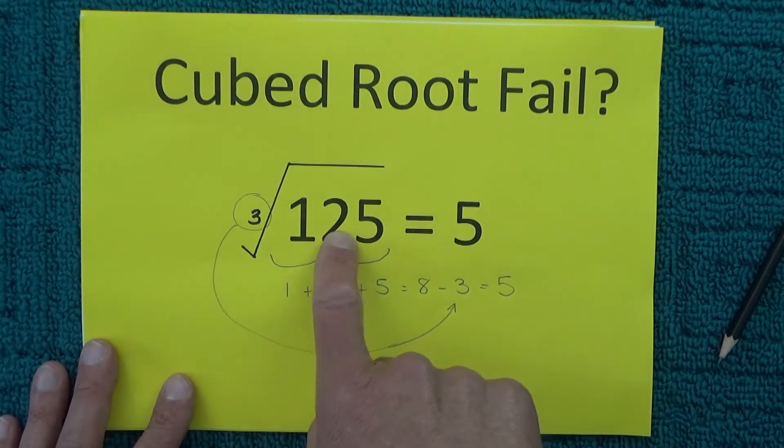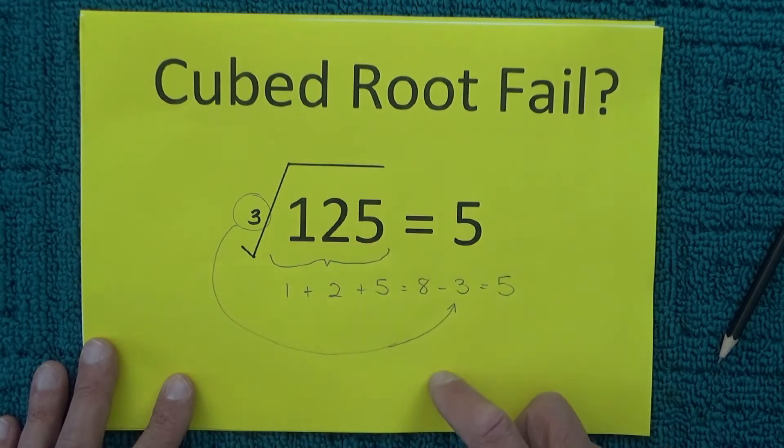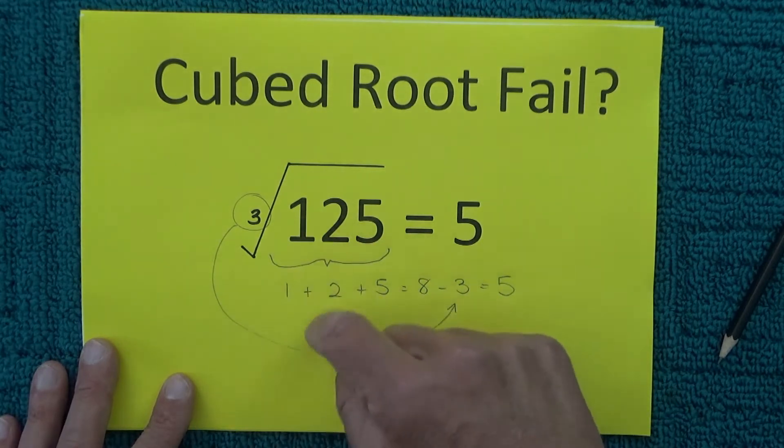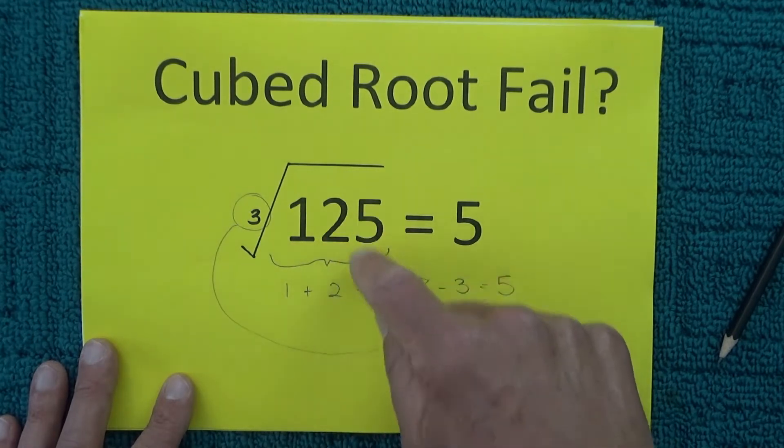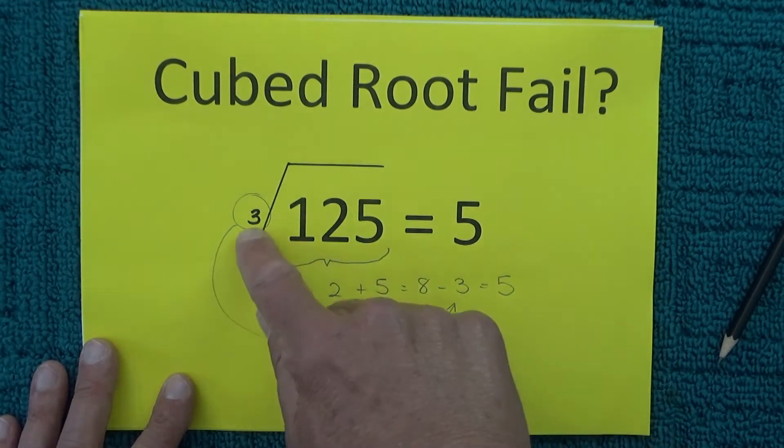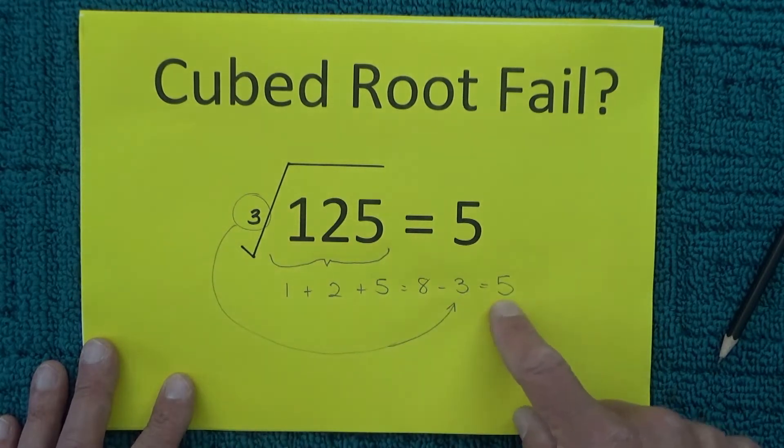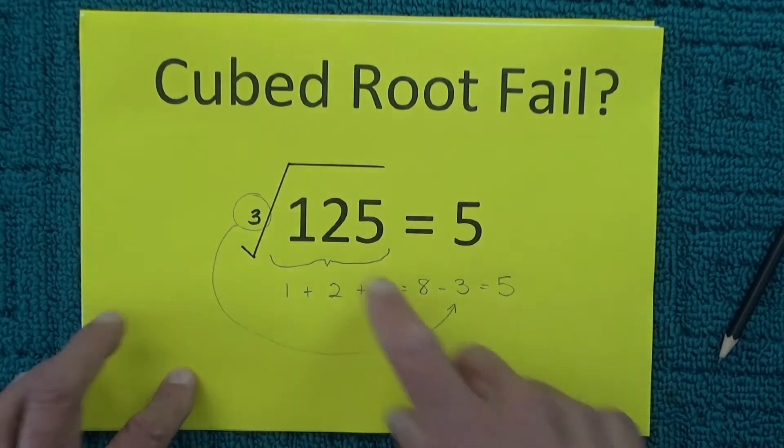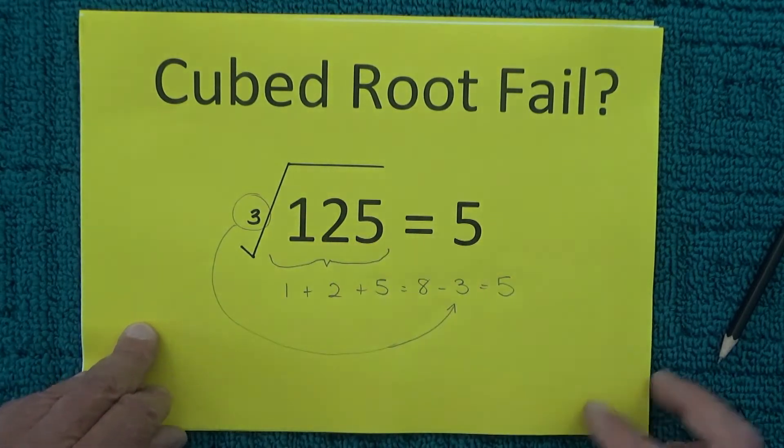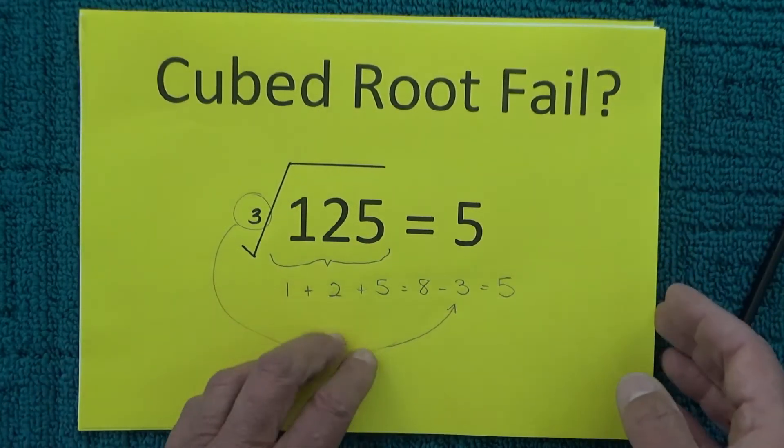So the cubed root of 125 equals 5 and the shortcut method is where you add the 1 plus the 2 plus the 5 equals 8 and take away the 3 and that equals 5 which gives you the same answer. As working out the cubed root of 125 and I thought to myself surely that can't be correct.